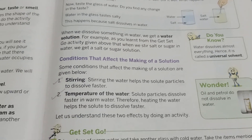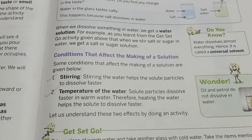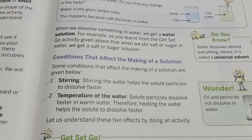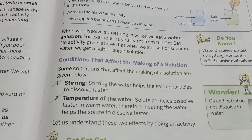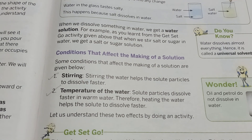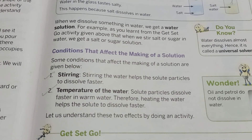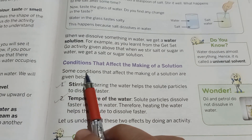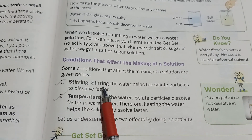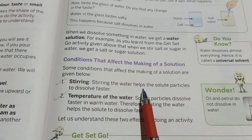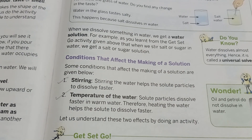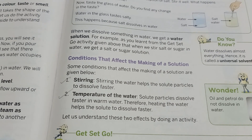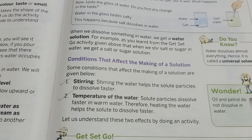Now we also learned in our earlier class the conditions that affect making of a solution. We can make a solution faster by stirring. When we stir the water, the solute particles dissolve faster and hence our solution gets prepared faster.